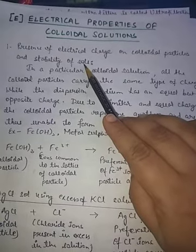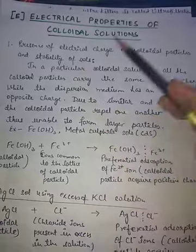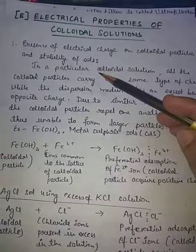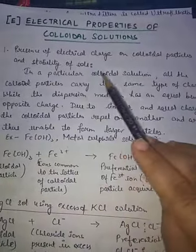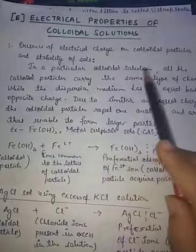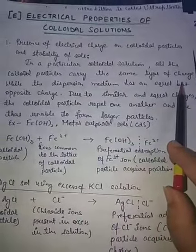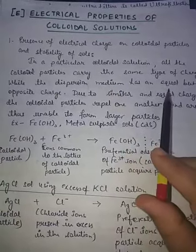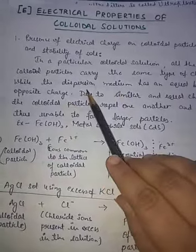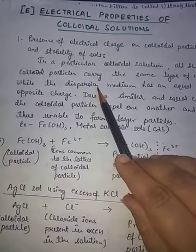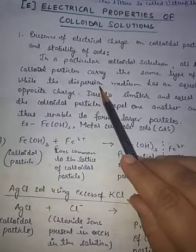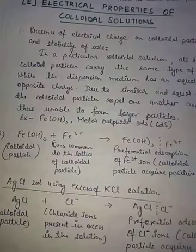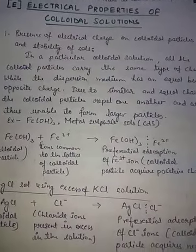Sols will be stable only if similar types of charges are present, because these charges will repel each other and make the sol stable. In a particular colloidal solution, all the colloidal particles carry some type of charge — either positive or negative — while the dispersion medium has an equal but opposite charge.